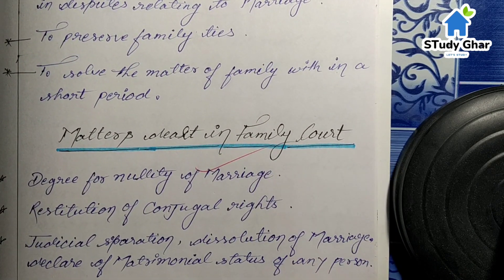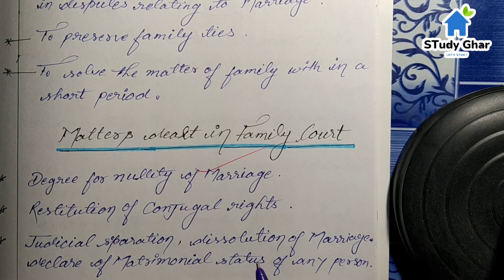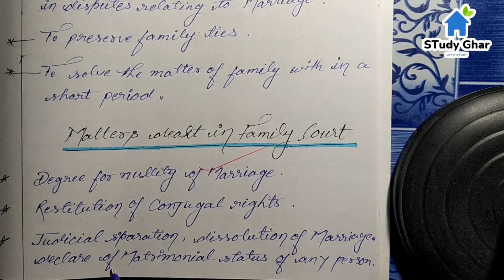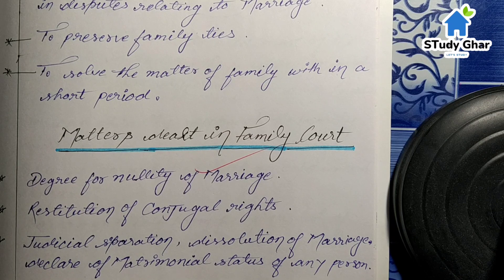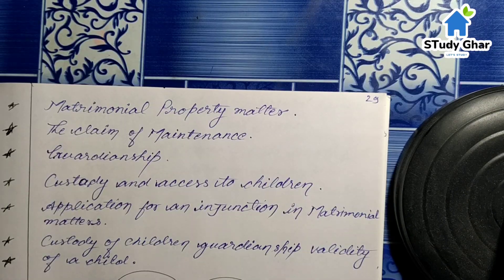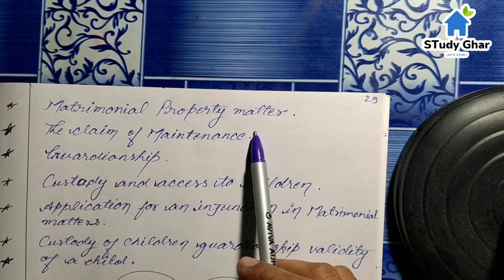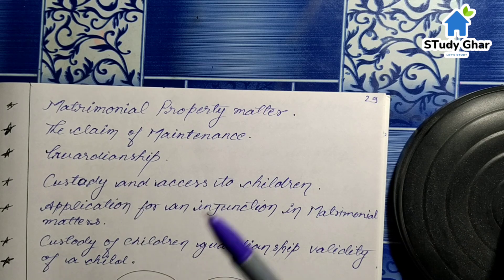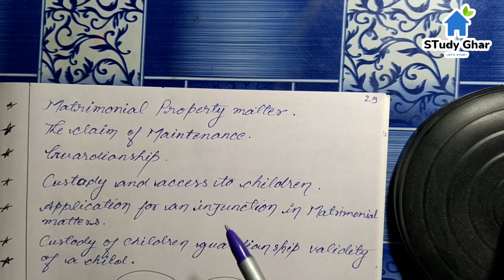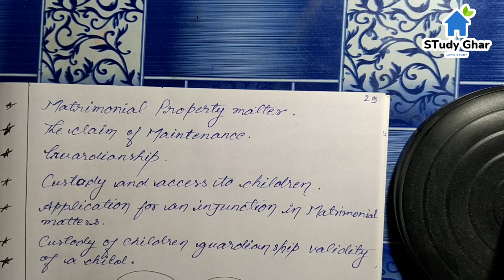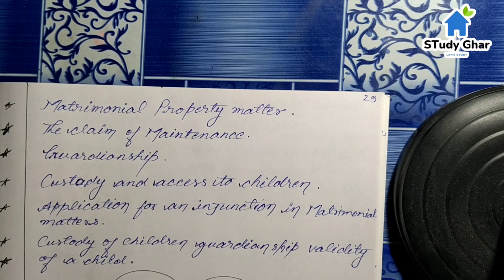The matters dealt with in family courts include: degree for nullity of marriage, restitution of conjugal rights, judicial separation, dissolution of marriage, declaration of matrimonial status of any person, matrimonial property matters, claims of maintenance, guardianship, custody and access to children, application for an injunction in matrimonial matters and custody of children, guardianship, and validity of a child. All these cases are heard and resolved in family courts.